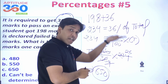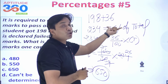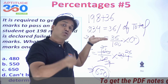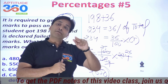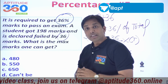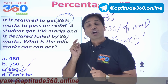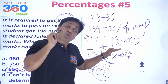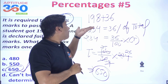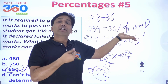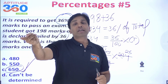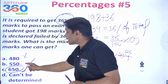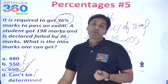Even better — notice that 36% is very close to one-third. If one-third of the total is approximately 234, then the total ≈ 234 × 3 = 702, which is close to 650. Use this approximation to eliminate wrong answer options. The answer is option C. Calculation complete.